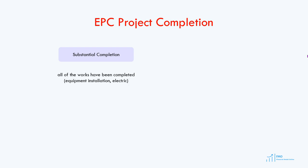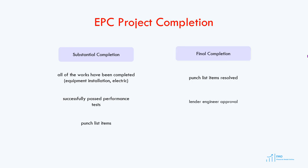Substantial completion is the stage when all physical and electrical works have been completed and the project has passed all reliability and performance tests, so the project is ready to operate. At substantial completion, there may still be small remaining items — such as painting, cleanup, and other minor works that do not affect performance — which are called punch list items. At final completion, all punch list items have been resolved and the project has been approved by the lender's engineer. At that point, all remaining payments to the EPC contractor are released.